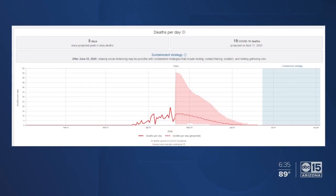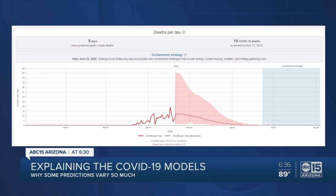Some of these models are dramatically changing their death estimates. For example, the University of Washington model had us at 270 deaths a week ago, and after some reporting it moved up to 480. There's a lot of noise to take into consideration. You've got to keep hitting refresh hoping for a new projection, because this does lag. In fact, the IHME model we're looking at today already lags by 48 hours.